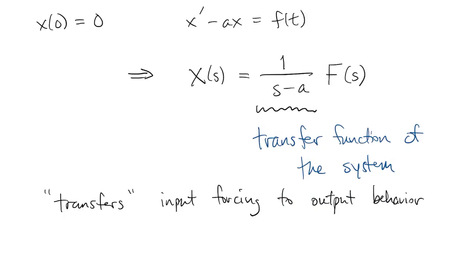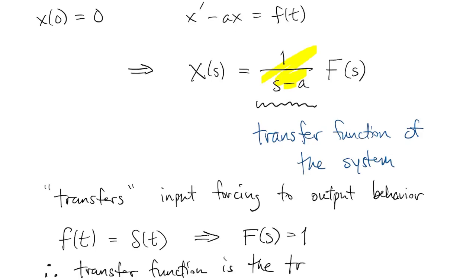And then finally, since a delta, delta of t, has transform equal to the constant function 1, then we conclude that the transfer function is actually the Laplace transform of the impulse response. In theory, if you know the impulse response of a system, then you take its transform and you can solve for the transform with any forcing function.